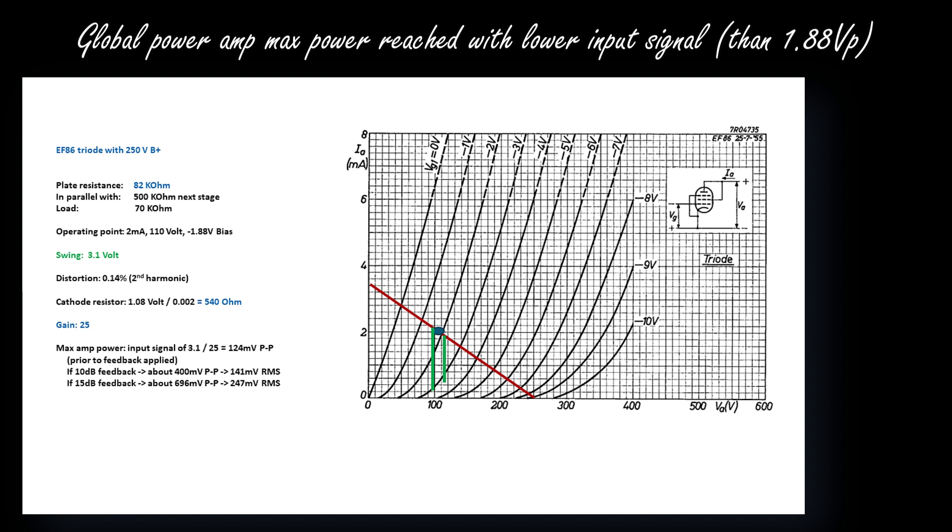The amplifier will be driven to maximum power with much lower input voltages to the EF86 stage. Let's calculate that. Let's calculate which is the amplitude value of my input signal which can drive the power amplifier to maximum power. We have the gain, which is 25, and the needed output swing to drive to maximum power, which is 3.1 volt peak-to-peak. So we can calculate that the needed input signal to my EF86 tube to drive the power amplifier to maximum power is 128 mV peak-to-peak.